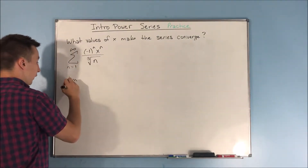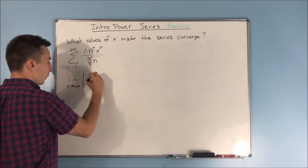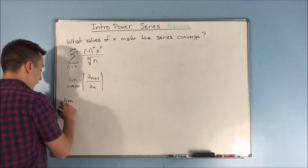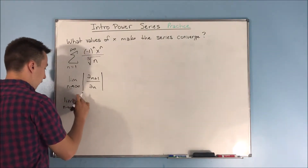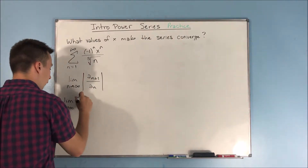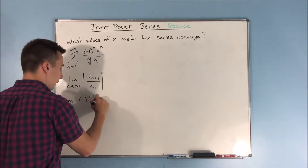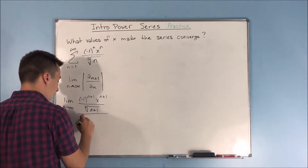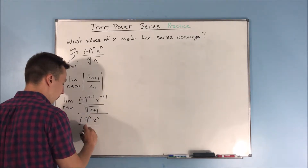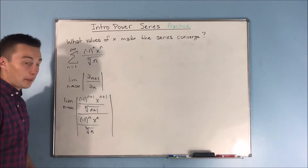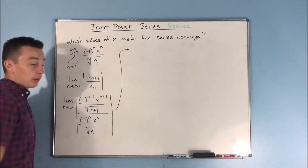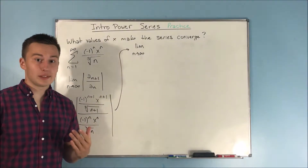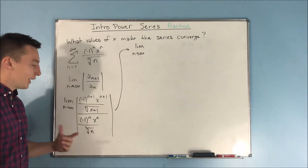We take the limit as n approaches infinity of the absolute value of a sub n+1 over a sub n. That's what the ratio test tells us to do. Writing that out, we get the limit as n approaches infinity of negative 1 to the n+1 times x to the n+1 over the cube root of n+1, all over negative 1 to the n times x to the n over the cube root of n, and we take the absolute value of that. We don't need to worry about those negative ones since we're taking an absolute value.